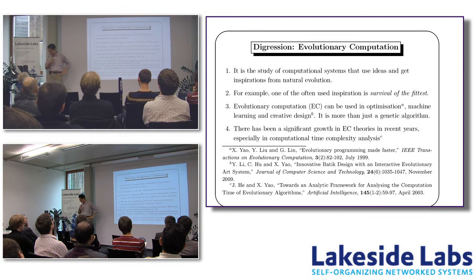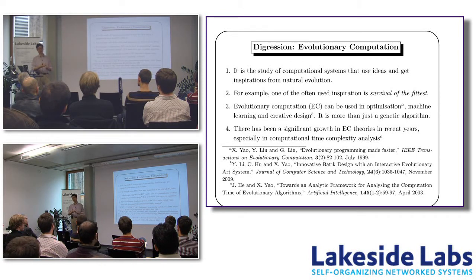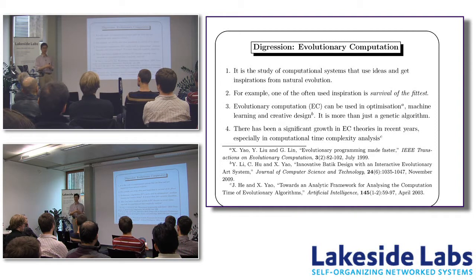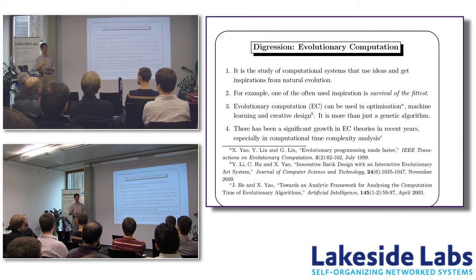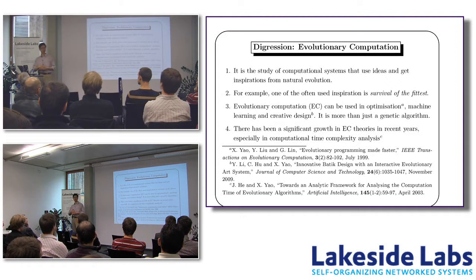Ten or even twenty years ago, whenever you mentioned evolutionary algorithms, you got two questions. One was: how can a random algorithm possibly work? Those questions have largely disappeared, because people understand that stochastic algorithms can be very powerful. The other typical question was: yes, you demonstrate interesting results — sometimes the best results so far on particular problems — but can you give any guarantees, what's the theory behind it? In the last ten years, there's been a lot more theoretical progress than in previous decades, so it's not just purely empirical work.